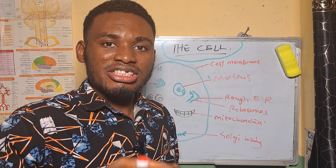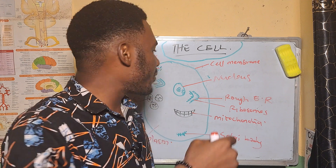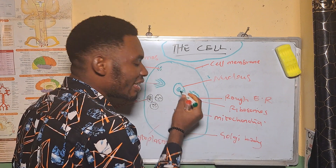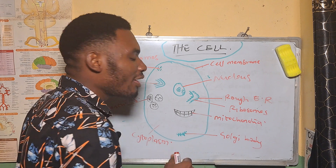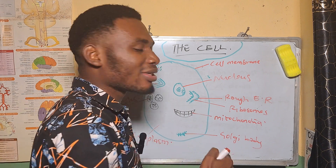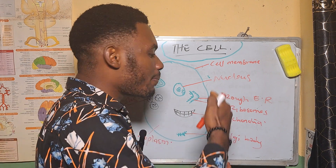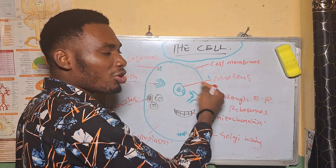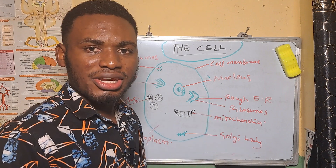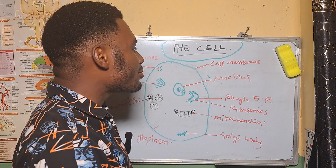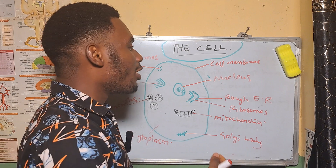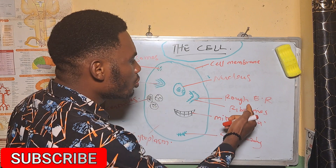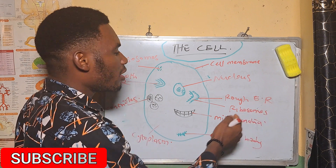The nucleus has chromatin and nucleosomes inside. This organelle carries the genetic material that helps to transfer the genetic material from the parent cell to the daughter cell.